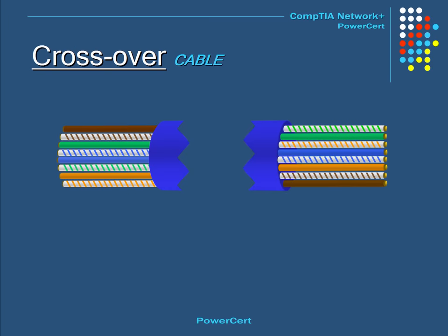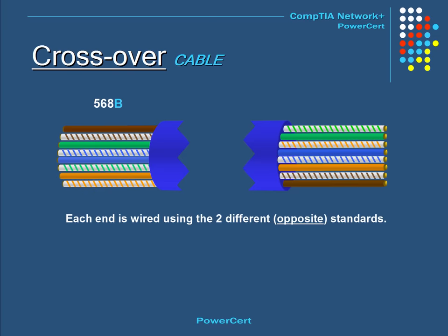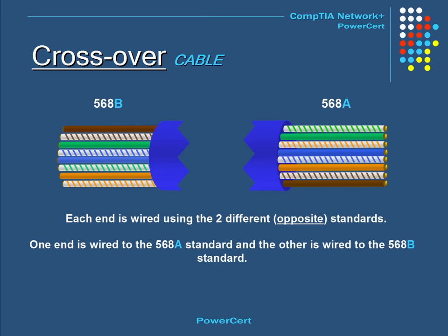Another type of cable is called a crossover. A crossover cable is created when both ends are wired using two different standards — for example, one end using the A standard and the other end using the B standard. Crossover cables are used to connect two similar devices together. For example, you can use a crossover cable to connect two computers directly to each other without using a hub or switch. They are also used to connect hubs or switches to each other.